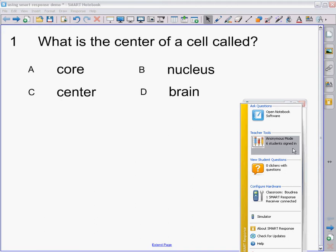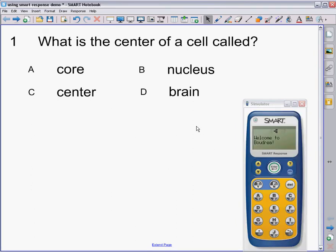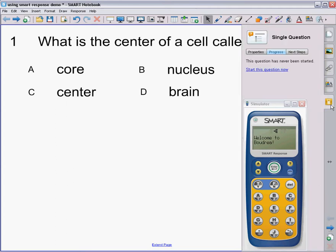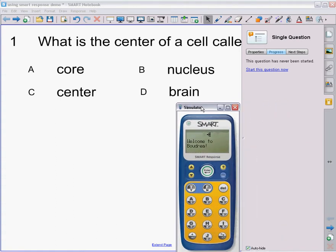Once all your students are signed in, you can go back to your yellow tab, your little yellow box tab that tells you about smart response. And you have the properties of this question. It tells you it's one point. We did that earlier.